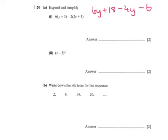We can now collect the terms that are the same. So we have 6y minus 4y, which leaves 2y. And we have 18 minus 6, so that is just 12. So the answer is 2y plus 12.